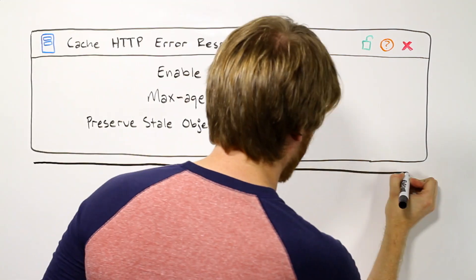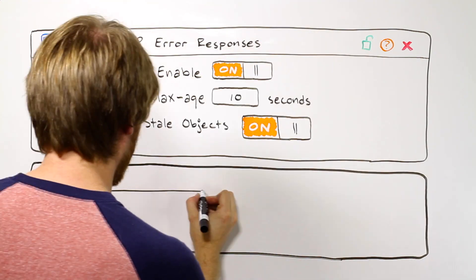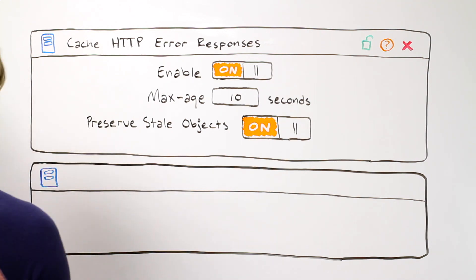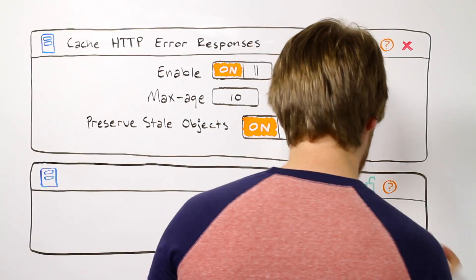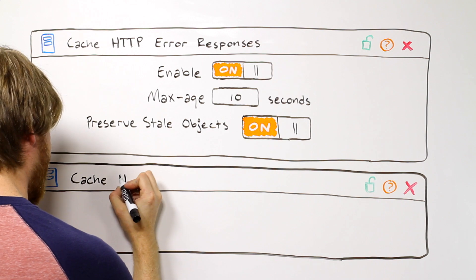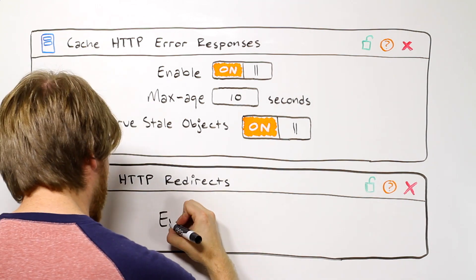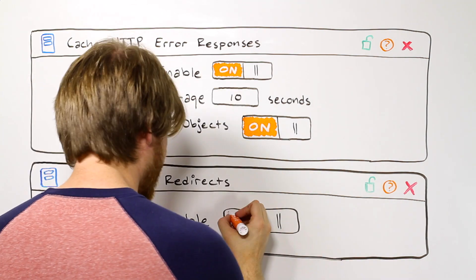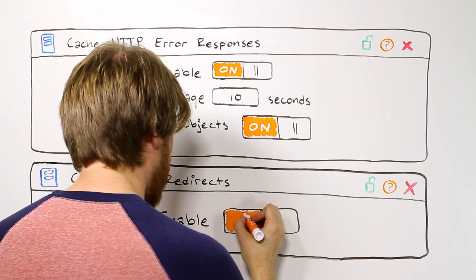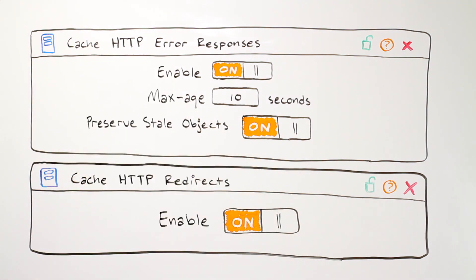The same concept can be applied to redirects. If you are issuing a 302, Akamai will cache it based on your cache control or expires headers. To override this action, you can enable the cache HTTP redirects behavior in Property Manager, which will configure the redirects to have the same settings as your HTTP 200 responses.